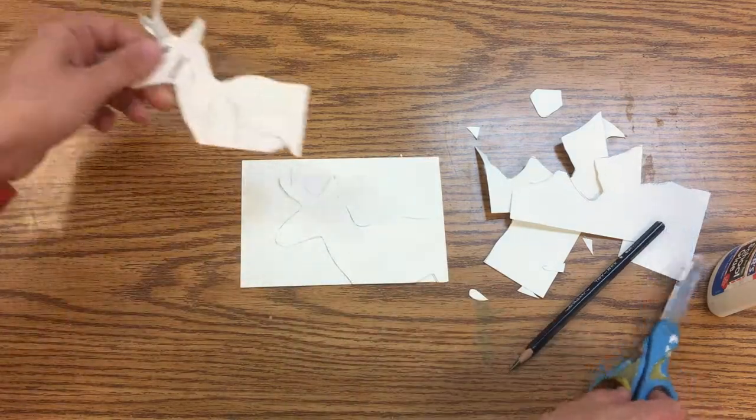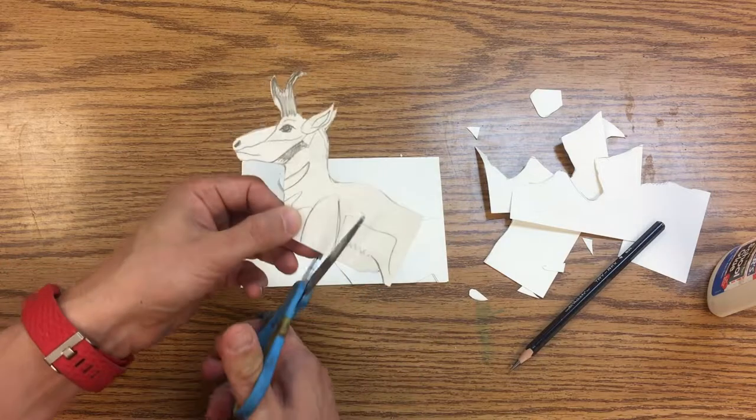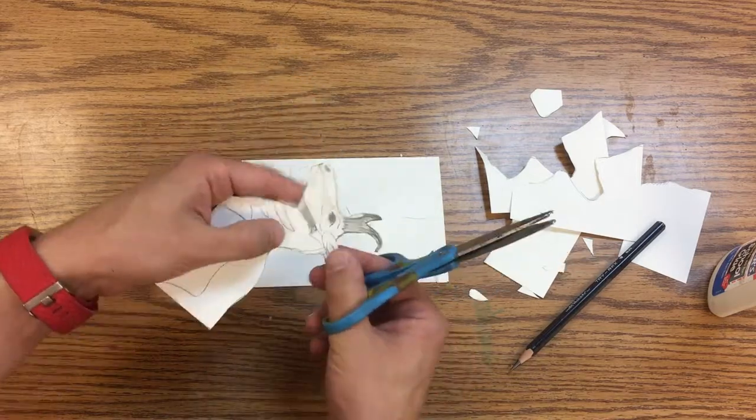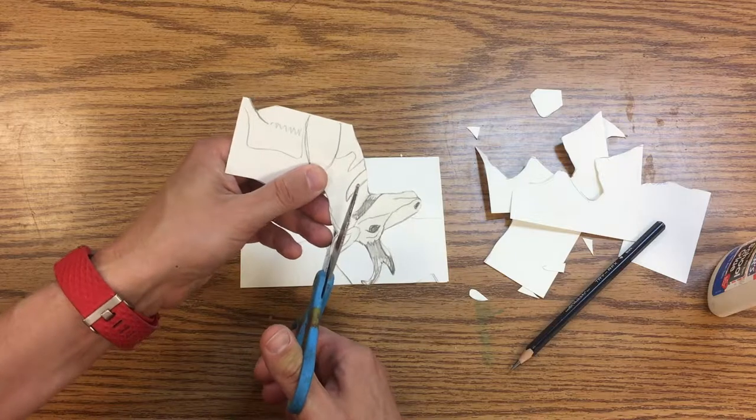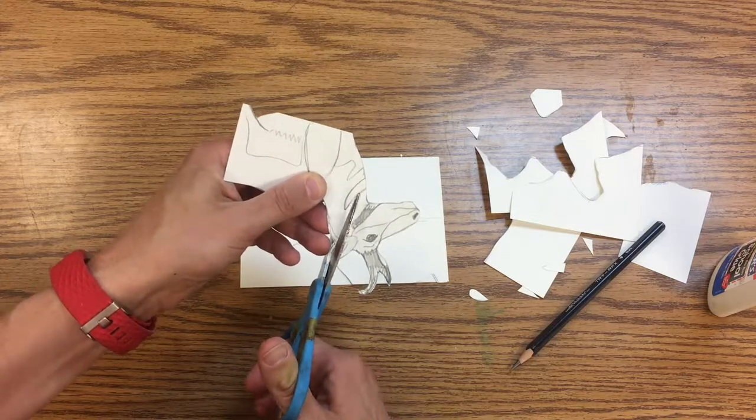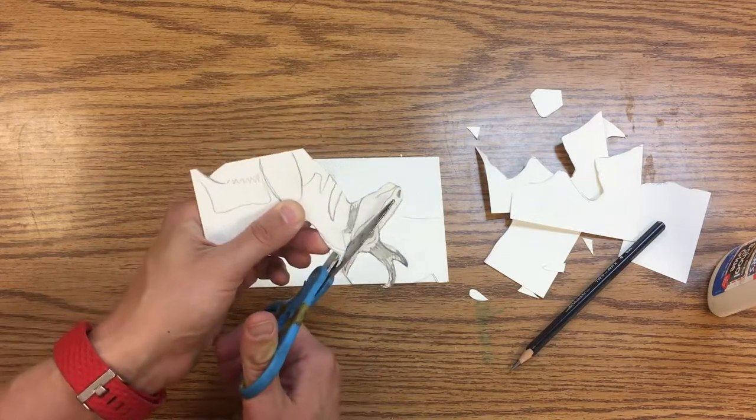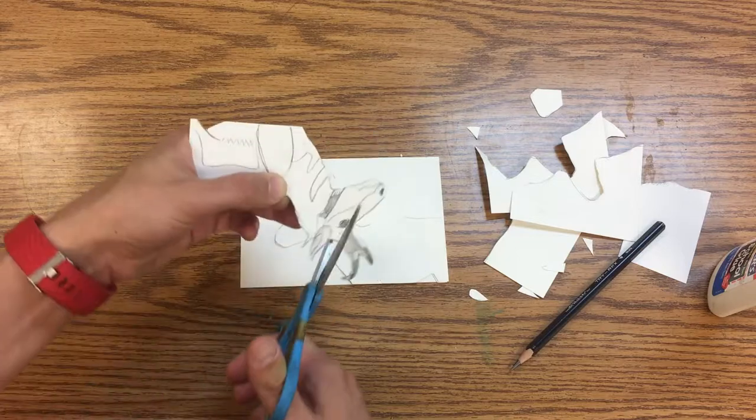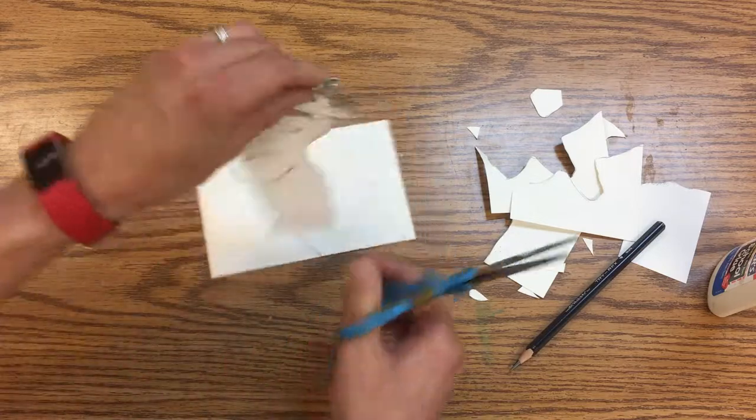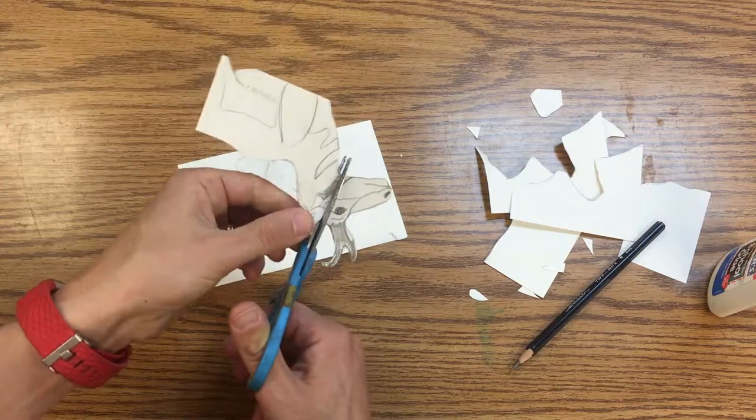Then I'm going to go back to my master and I'm going to try to find things that could really stick out. Like this ear, we could probably cut that and then we can raise that part up a little bit.